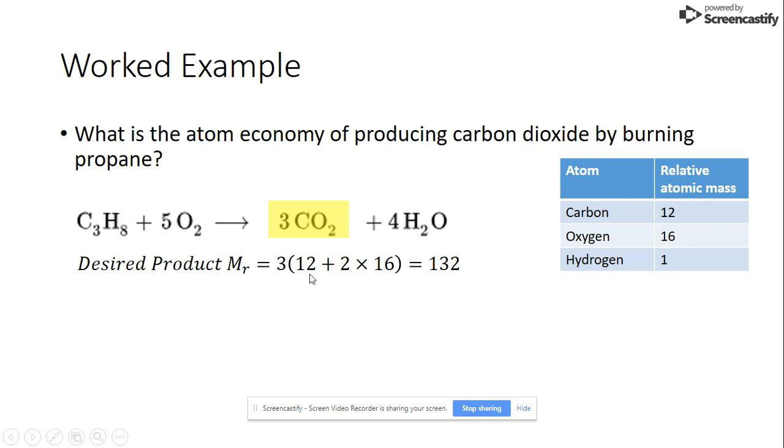The relative atomic mass of carbon is 12 so that's why we have a 12 there and then we've got a 2 because we've got two oxygens multiply that by 16 which is the relative atomic mass of oxygen stick that in the calculator and we get 132.